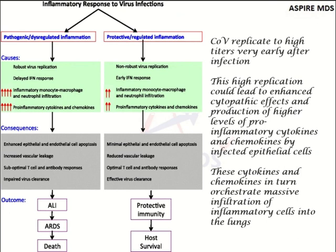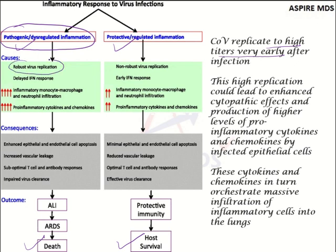So we have seen two kinds of reactions in patients infected with coronavirus. Coronavirus can cause two kinds of reactions: pathogenic inflammation and protective inflammation. In patients with pathogenic inflammation, there are chances of death, whereas patients who show protective or regulatory inflammation have high chances of survival. In pathogenic inflammation, there is a very high titer of the virus after infection — robust viral replication is taking place.